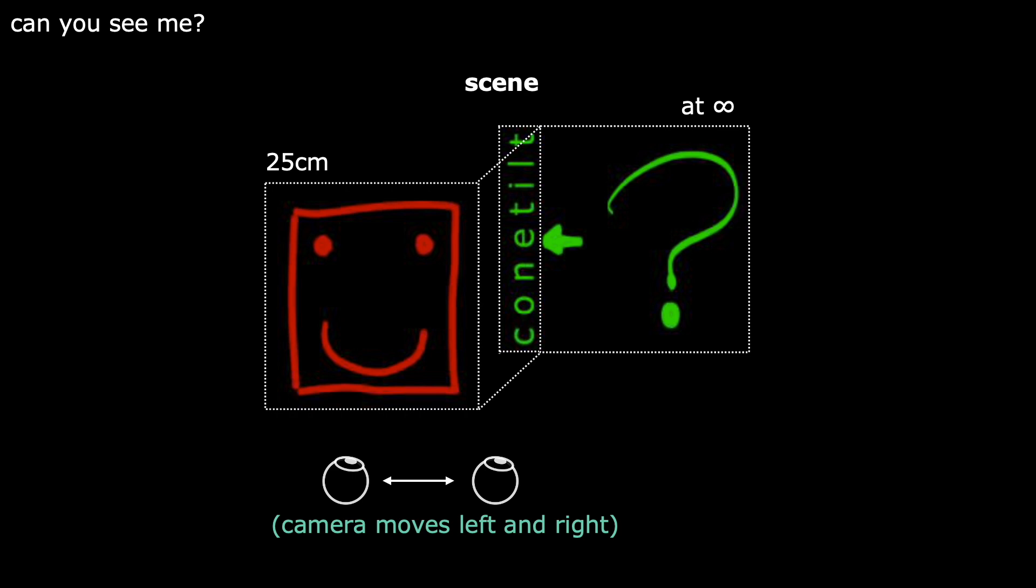Here is another scene. In this scene, there is a smiley face in the front, and a question mark with the text ConeTilt afar. In reality, when we move our eyes left and right, we should see that the text reveals and hides behind the smiley face.